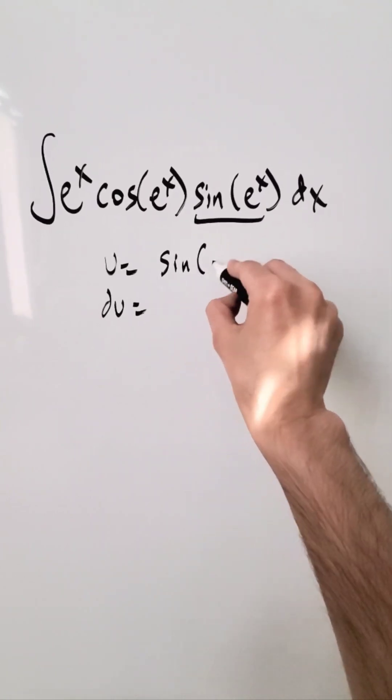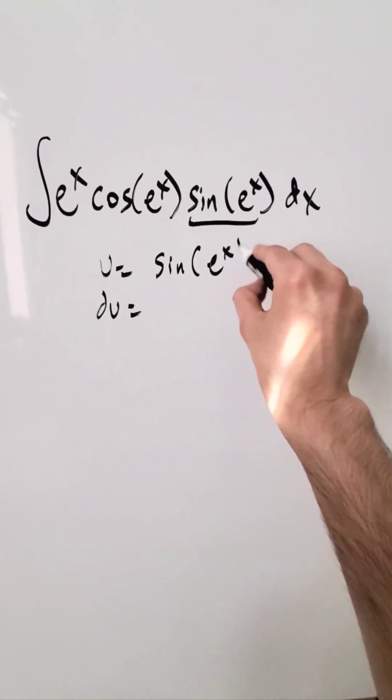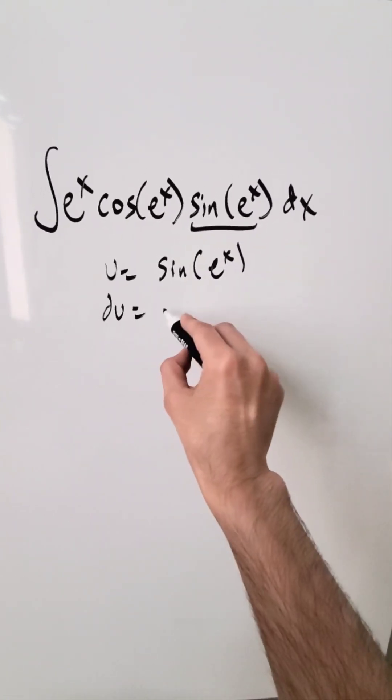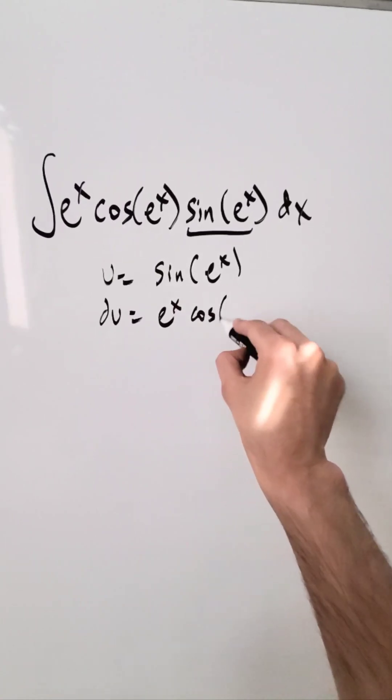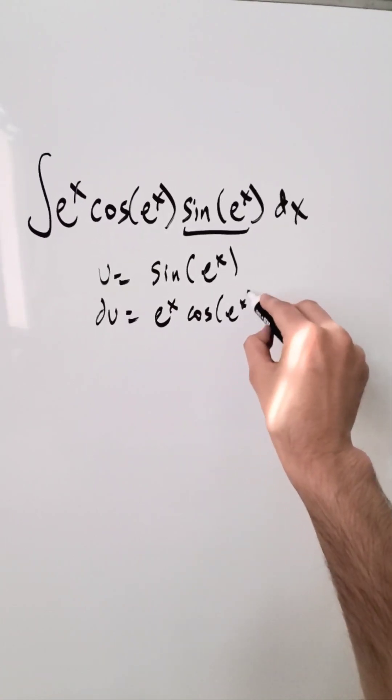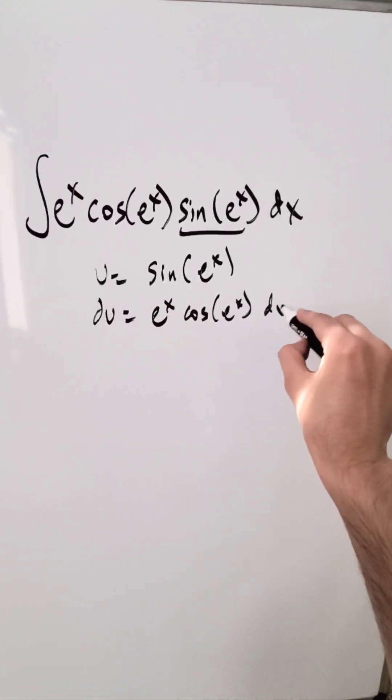u is equal to sine of e exponent x. Then the derivative of this, by means of the chain rule, we'll have du equals e exponent x cosine of e exponent x dx.